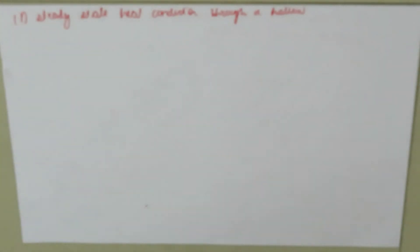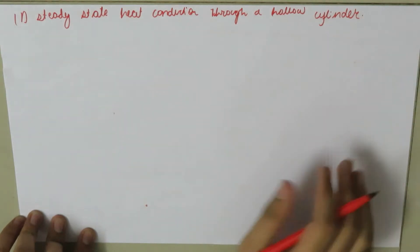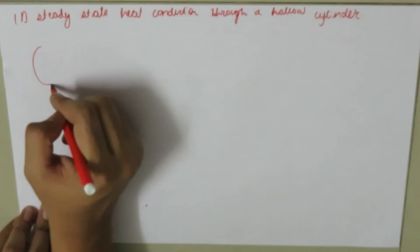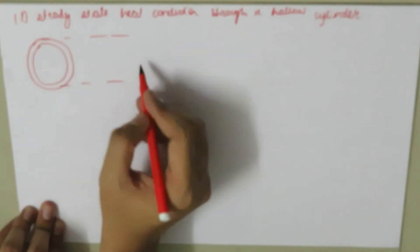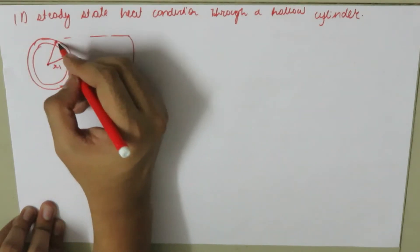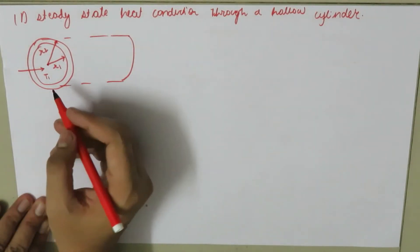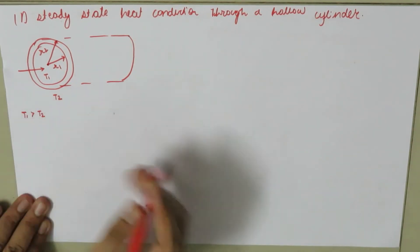Today we are going to study the concept of one-dimensional steady-state heat conduction through a hollow cylinder. Suppose we have a cylinder where R1 is the inner radius, R2 is the outer radius, and fluid is flowing through this tube at temperature T1, with the surrounding temperature T2. We assume T1 is greater than T2.